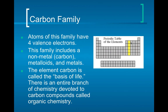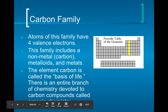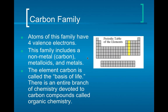The carbon family has four valence electrons — continuing the trend of one, two, three, four. The carbon family is unique because it includes non-metals, metalloids, and metals — all three main categories. Carbon itself is called the basis of life. There's an entire branch of chemistry called organic chemistry, which is the study of anything having to do with carbon.